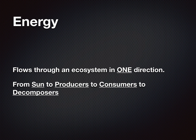Energy flows through an ecosystem in one direction, starting from the sun. It goes from the sun to producers, to consumers, to decomposers. In that consumers group you also have scavengers, and there are multiple levels of consumers — primary, secondary, tertiary — which you learned about last year. After decomposers, it goes back into the ground to be used by the producers that start the cycle all over again. So energy is also a cycle.